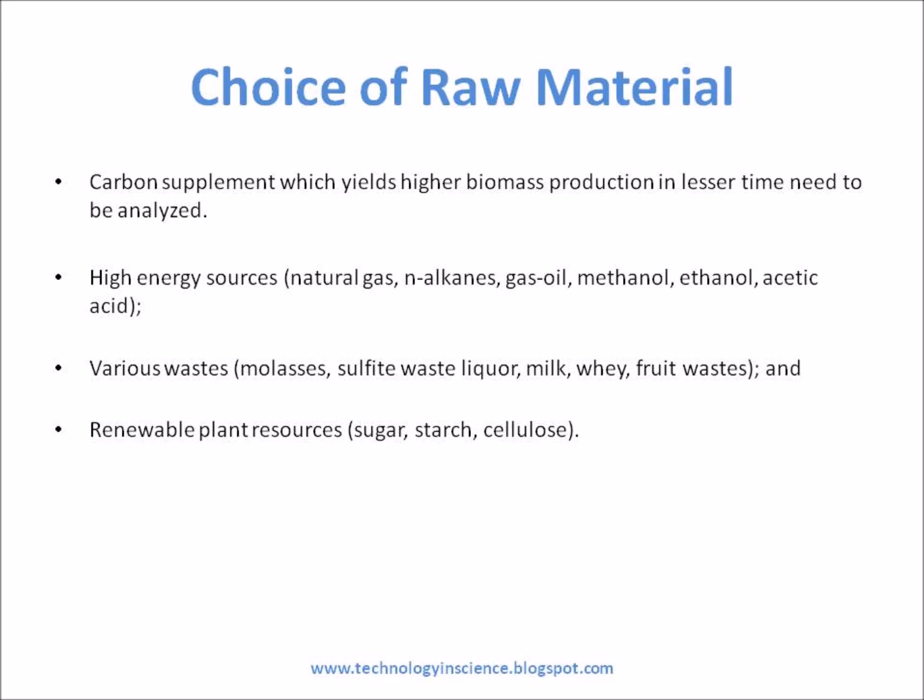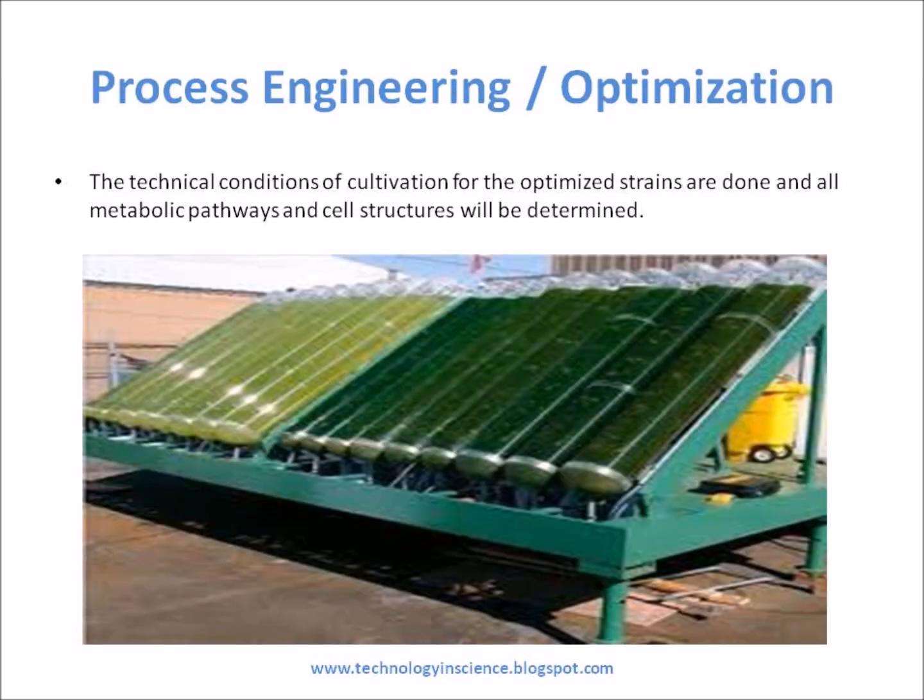Substrates for single-cell protein production can be subdivided into three categories: high energy sources — for example, natural gas, N-alkanes, gas oil, methanol, ethanol, and acetic acid; various wastes — for example, molasses, sulfite waste liquor, milk whey, and fruit wastes; and renewable plant resources — such as sugar, starch, and cellulose.